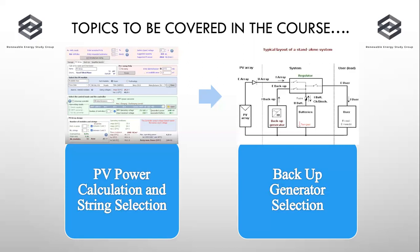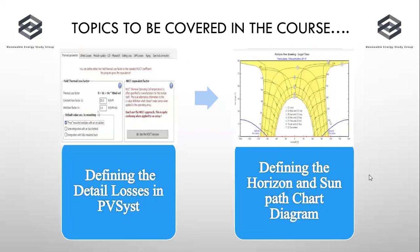The next point will cover backup generator selection. If a generator is available in the system, we'll look at how to account for it in PVSyst software for further parametric selection.